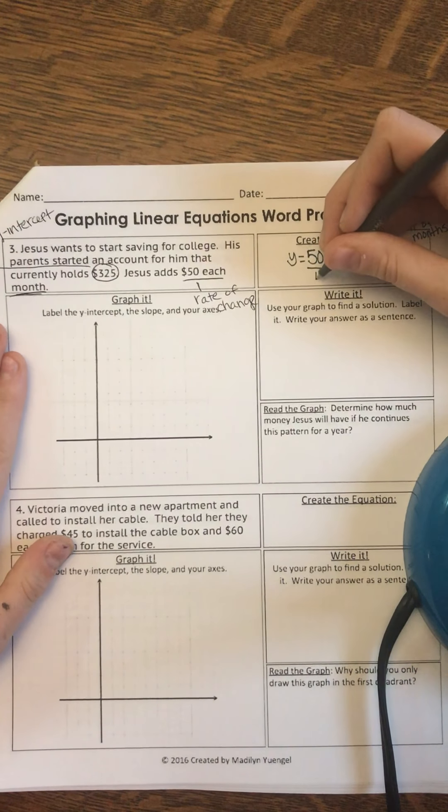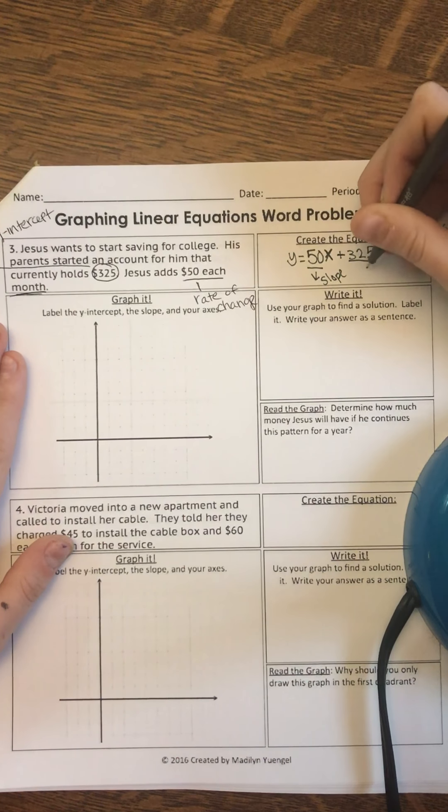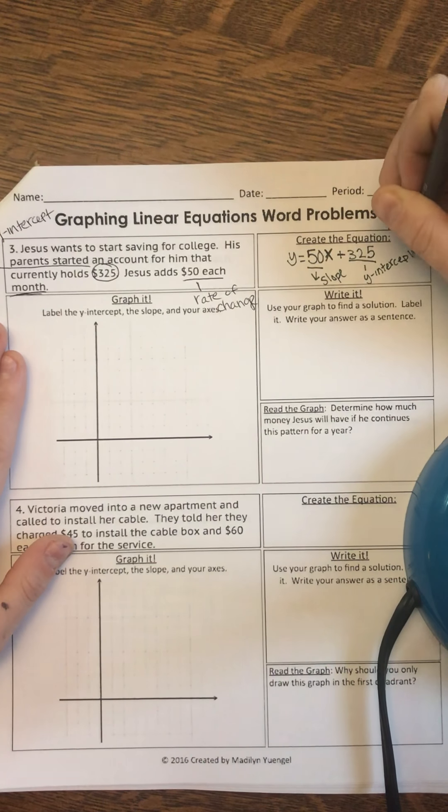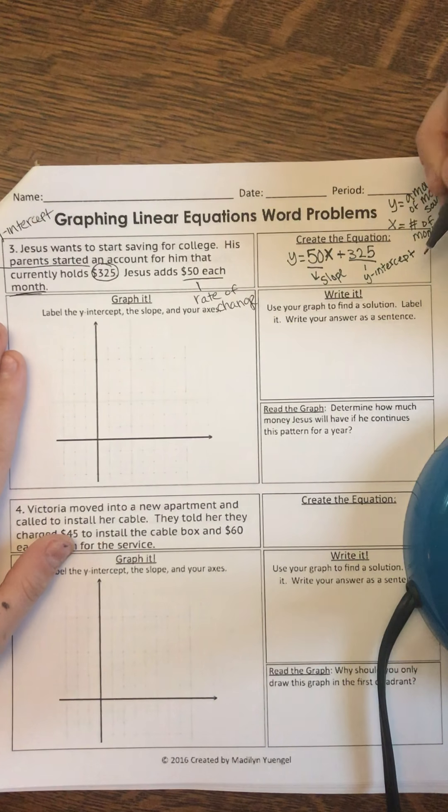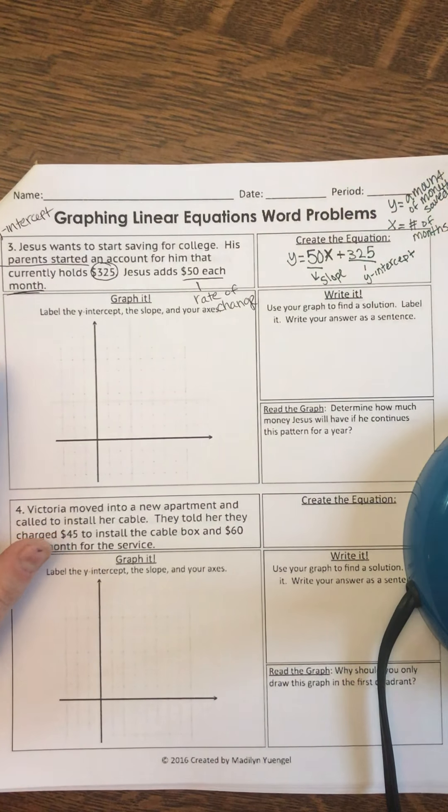So 50X plus $325. So 50 is my slope. And 325 is my Y-intercept. I can graph this because it's in Y equals MX plus B.